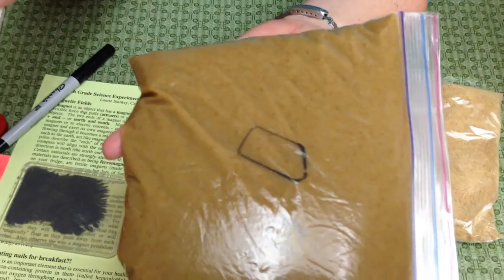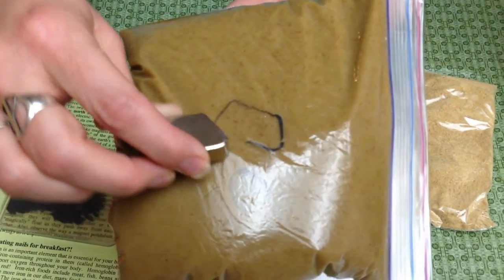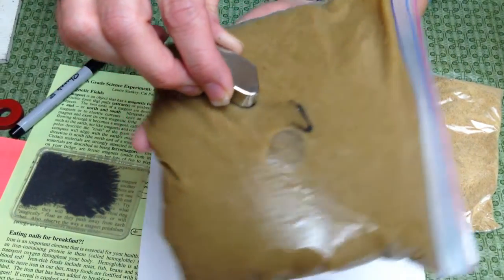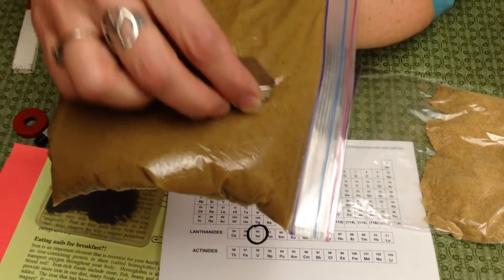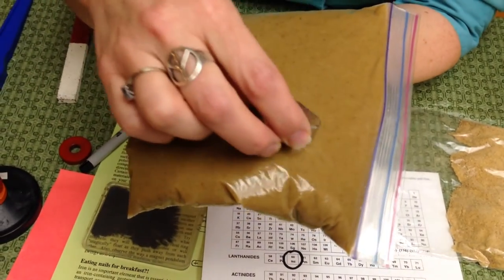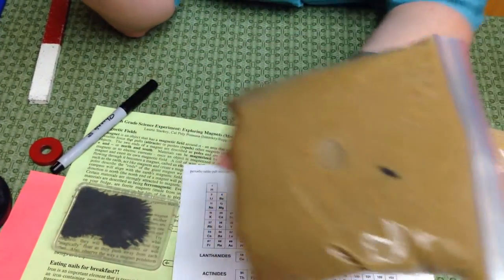If I lift this up, you can see all the shavings there, and you can see that they can move around—they'll be attracted to that magnet because they are iron shavings. We call this demo 'eating nails for breakfast.' That's kind of fun and always very interesting for the kids.